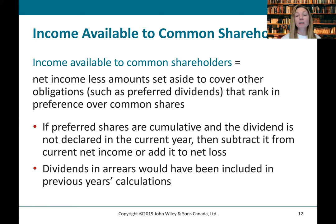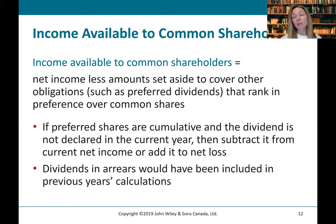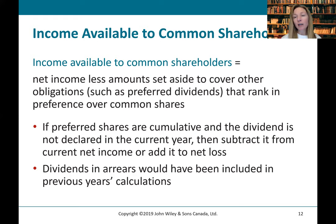If preferred shares are cumulative and the dividend is not declared in the current year, we subtract it from current net income to take into account the fact that we owe that amount to the preferred shareholders before any distribution to common shareholders. Dividends in arrears would have been included in prior years' calculations, so we only need to take into account the current year and not worry about prior years.